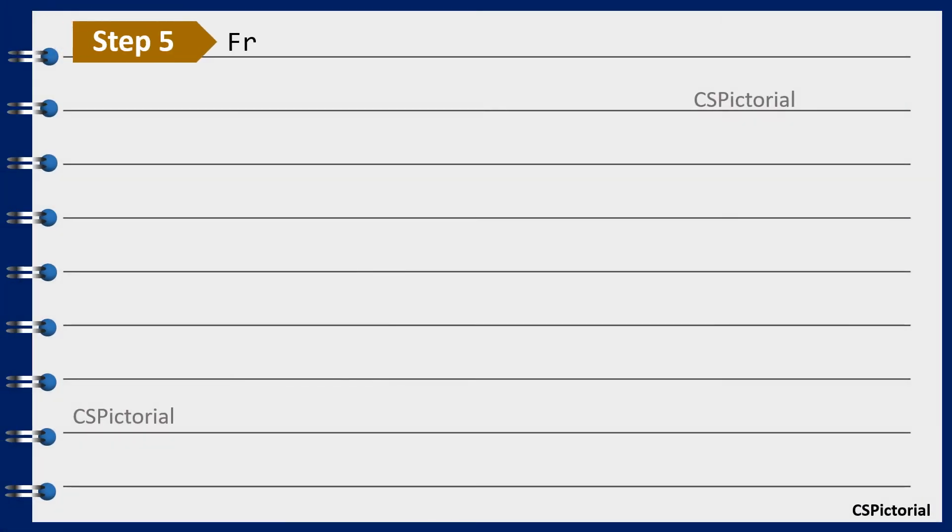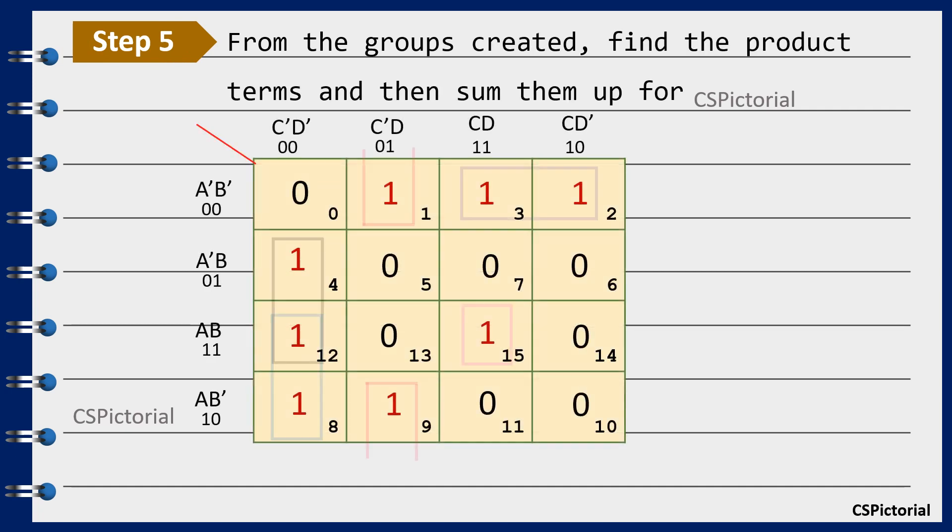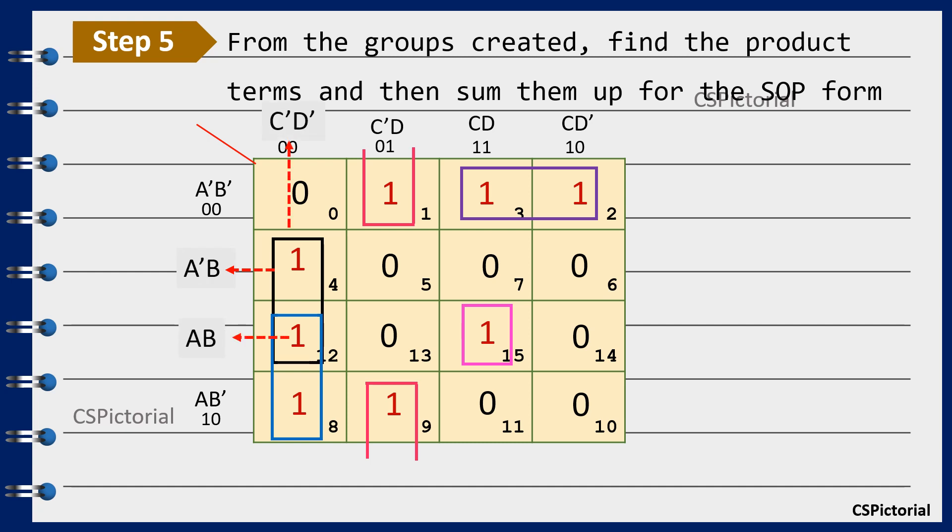From the groups created find the product terms and then sum them up for the SOP form. Let us first consider this group. Note the corresponding Boolean terms. This group points to the terms a bar b, a b and c bar d bar. K-map works on the basis of complement laws so here a and a bar get cancelled and the terms b, c bar d bar get into the final simplified expression.